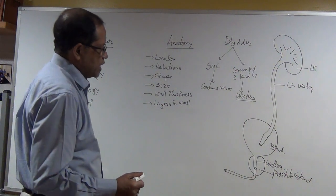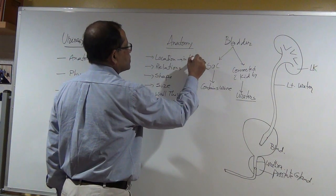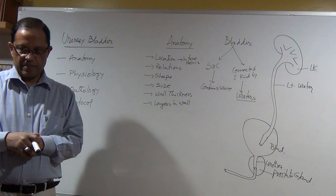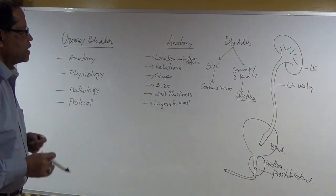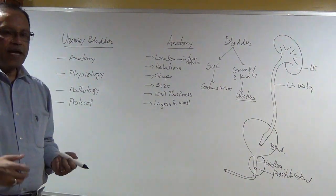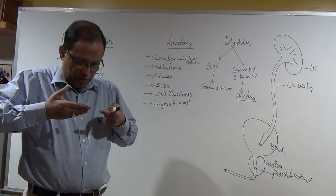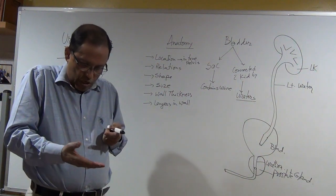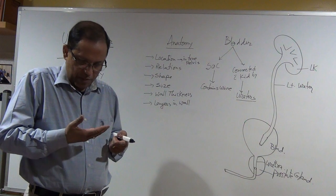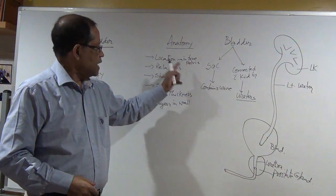Bladder location is in the true pelvis — the bony pelvis. Is there a false pelvis? Yes. If you draw a line called the linea terminalis from the sacral promontory — the top surface of the sacrum — to the posterior upper border of the symphysis pubis, then the space above the linea terminalis is the false pelvis, and below is the true pelvis. Female reproductive organs and the bladder are in the true pelvis.